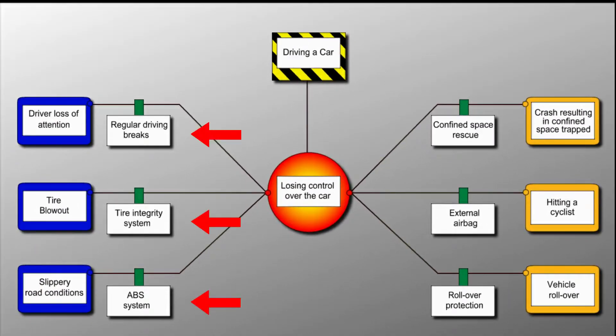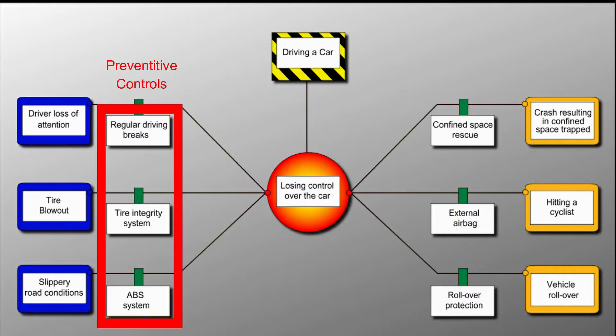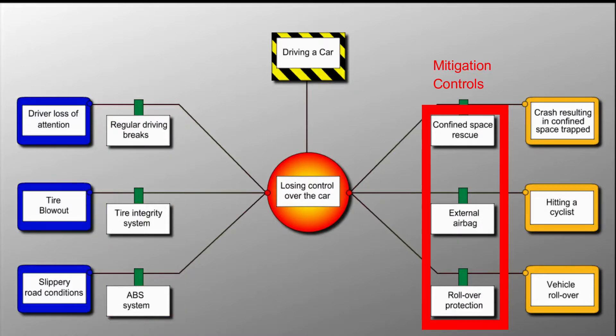Barriers can be placed on the threat and consequence lines. On the left side, they are designed to prevent the top event from happening in the first place, while on the right side, they try to prevent or mitigate the severity of the consequences.